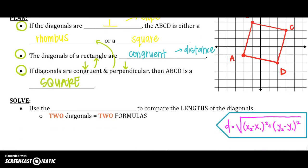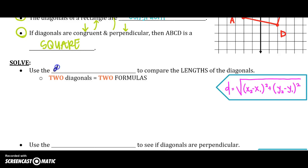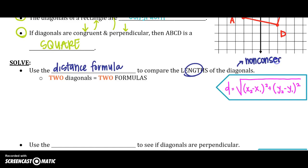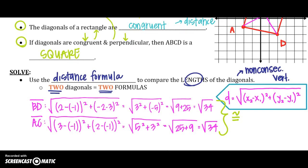The first thing we need to do is use the distance formula to compare the lengths of the diagonals. Remember, the diagonals connect the non-consecutive vertices, so we have two diagonals and need two distance formulas. After doing the two distance formulas for my diagonals, I get the square root of 34 and the square root of 34, which means they are congruent. So we know this shape is a rectangle because the diagonals are congruent.